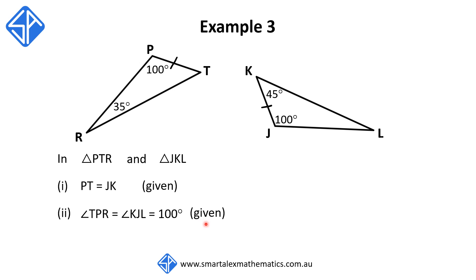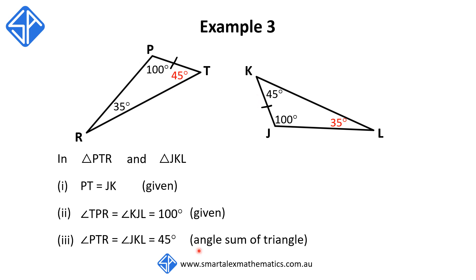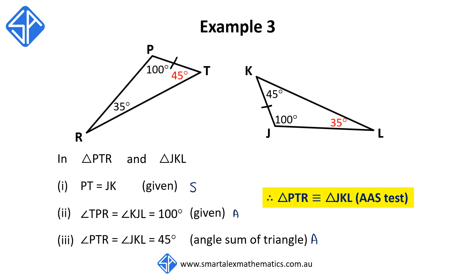For the third reason, it's a bit more tricky because 35 degrees and 45 degrees in the diagram are not the same. However, using the fact that the angle sum of a triangle adds to 180 degrees, we can deduce that angle T is 45 degrees and angle L is 35 degrees. So the third reason is: angle PTR is equal to angle JKL, which is 45 degrees — reason: angle sum of triangle equals 180 degrees. We have an S, an A, and another A, so triangle PTR is congruent to triangle JKL using the AAS test.